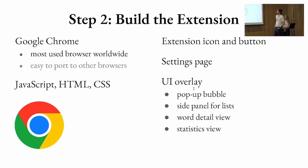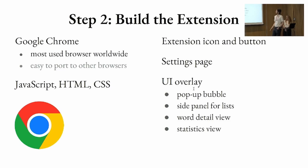We decided to build a browser extension. We are working with Google Chrome — the most widely used browser today — and it also sets technical standards, so an extension for Google Chrome is pretty easy to port into other browsers as well. This uses JavaScript, HTML, and CSS — the same technology used on the web. We are adding UI elements into your browser and the page: an extension icon that activates the functions, a dedicated settings page where you can configure how you want the extension to behave, and UI overlay elements added to the page — which include a pop-up bubble, a side panel useful for building word lists, and a detailed view for statistics of the given page.